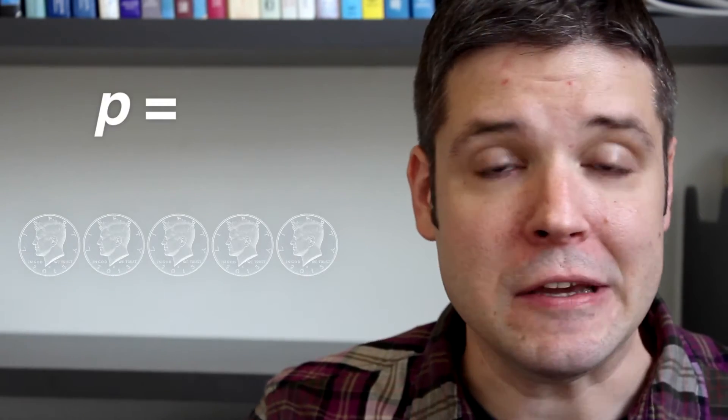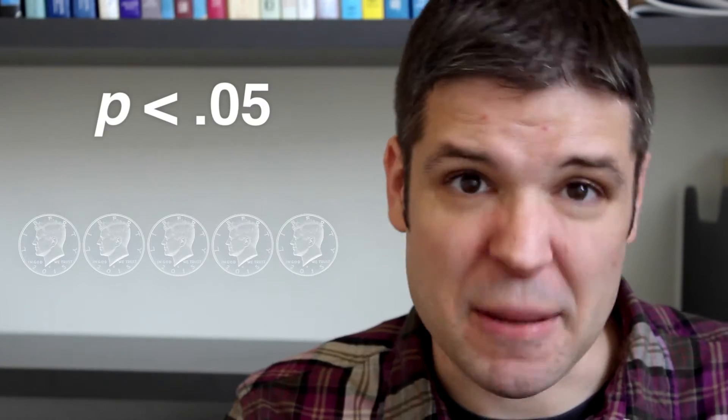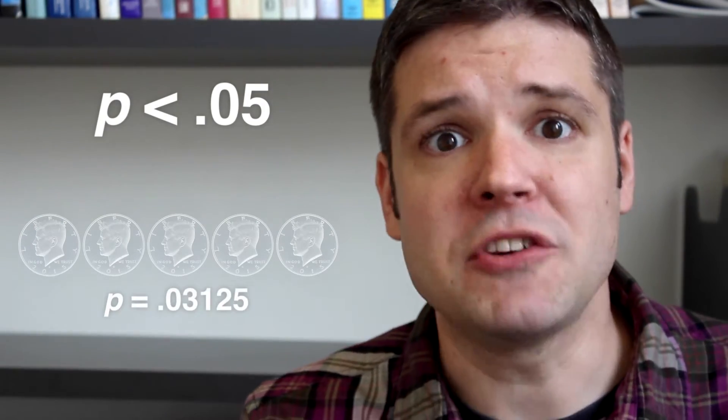At this point, we've crossed a threshold that's been held as a standard for a long time in many fields. And that's the P equals .05 significance threshold. If researchers find a result that has less than a 1 in 20 chance of happening, they decide to pay attention to it, calling it significant. And this imaginary test that produced five heads in a row has a P value of .03125.